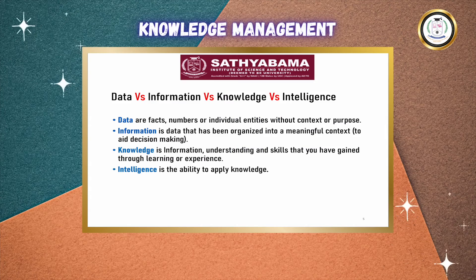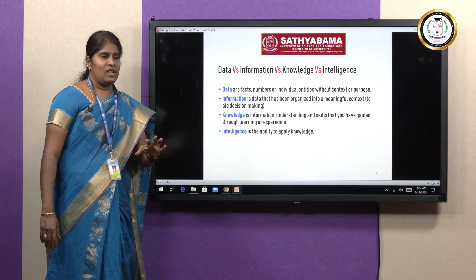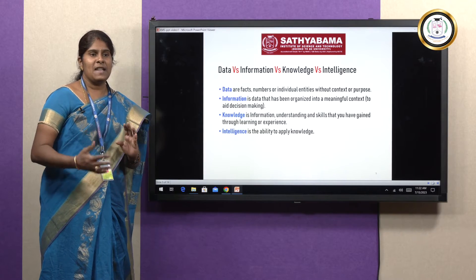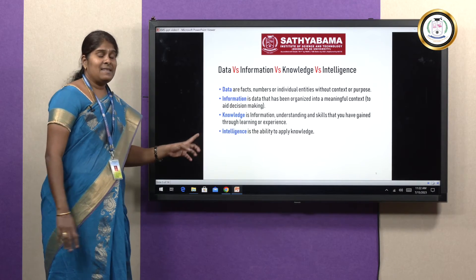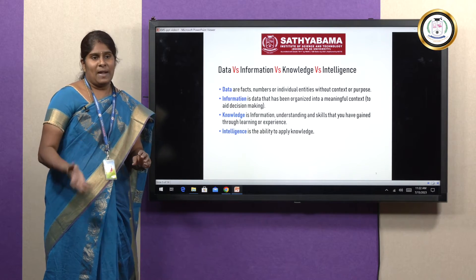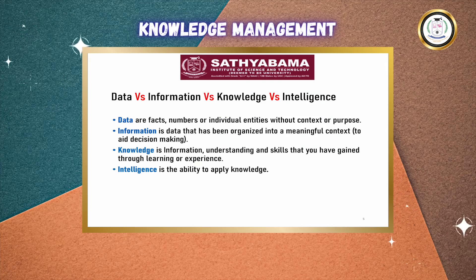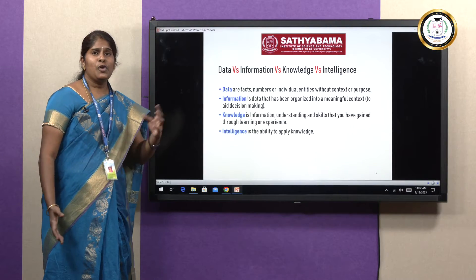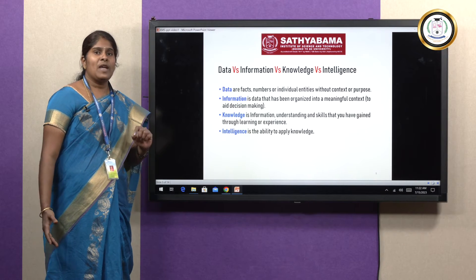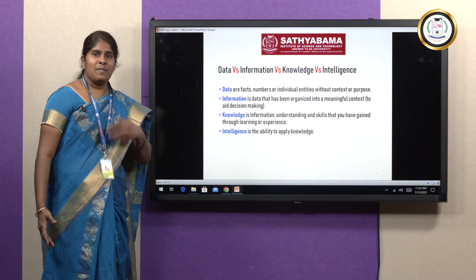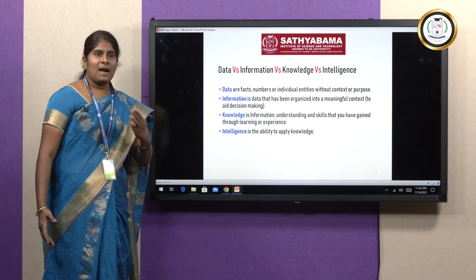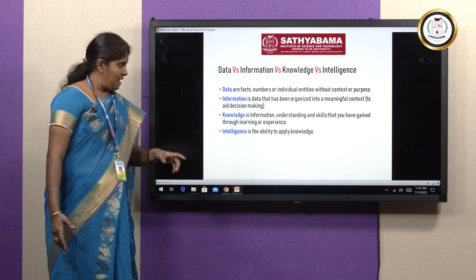Let us see the difference between knowledge and intelligence. Knowledge is obtained by learning, practice, and experience. Whereas intelligence is nothing but the ability to apply knowledge. Intelligence is something we get by birth — you do not create intelligence. Whereas you can become a knowledgeable person by learning and understanding more concepts through more practice and experience.